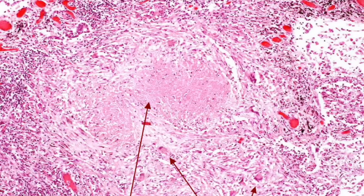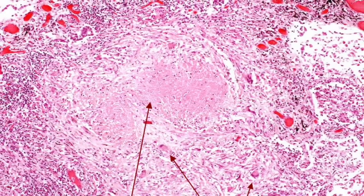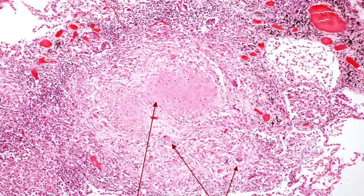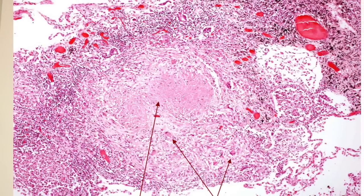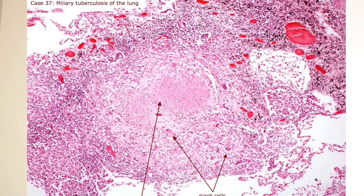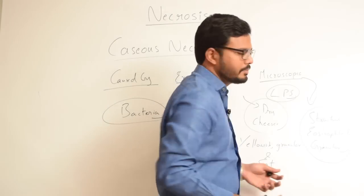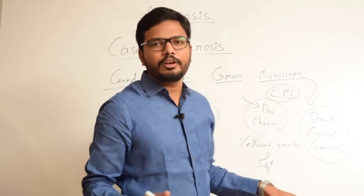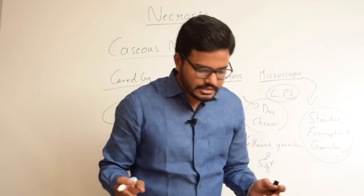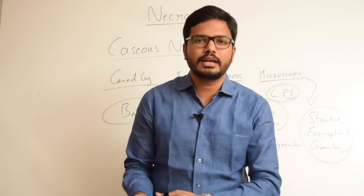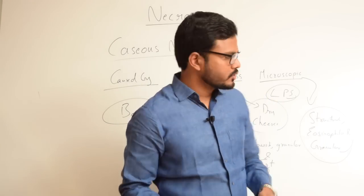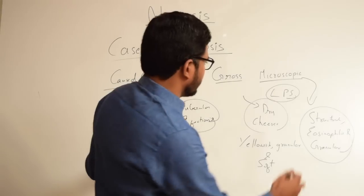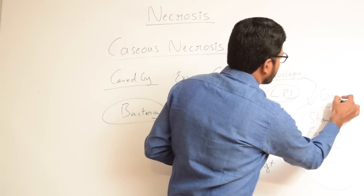Coming to the microscopic features of caseous necrosis — it is structureless, eosinophilic, and granular. It is surrounded by granulomatous inflammation. A granuloma basically contains epithelioid cells interspersed with Langhans giant cells surrounded by a peripheral mantle of lymphocytes — that is the typical appearance of a granuloma. In the center of the granuloma, we find caseous necrosis. So this entire necrosis is surrounded by a granuloma.